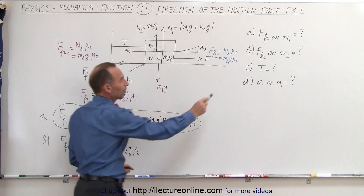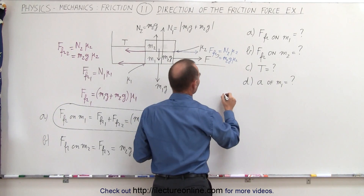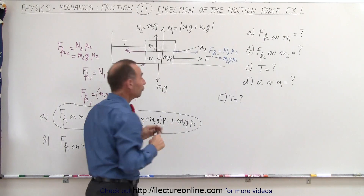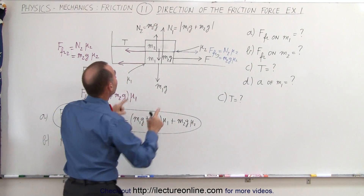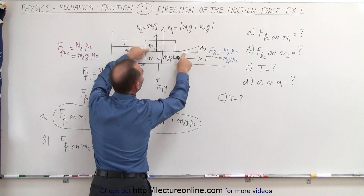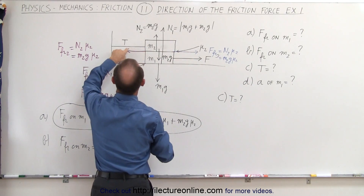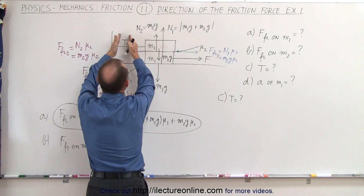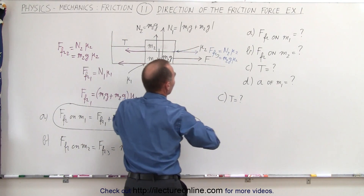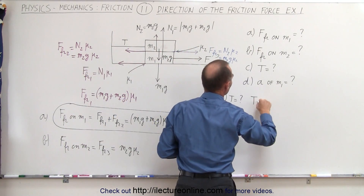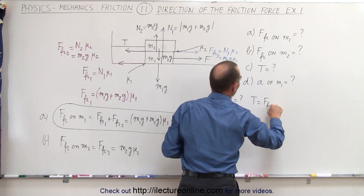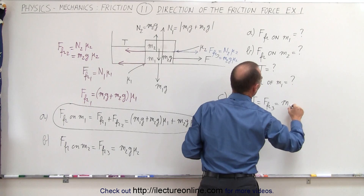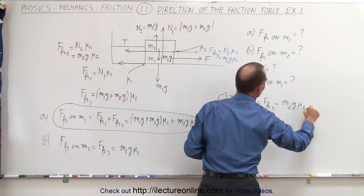For part C, we need to find the tension in the rope. There are only two forces acting on M2: friction force 3 pulling to the right, and tension T pulling to the left. Since M2 is not accelerating, the tension must equal friction force 3. Therefore, tension T = friction force 3 = M2G × mu sub 2.